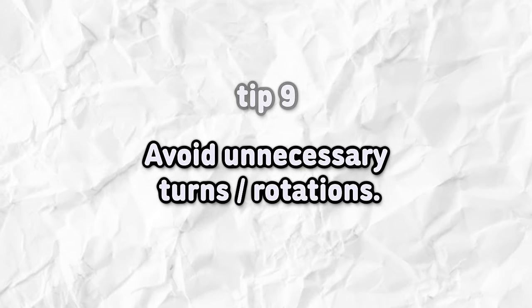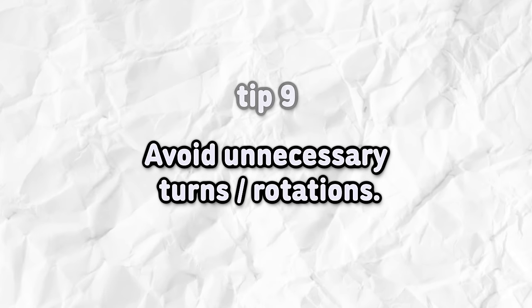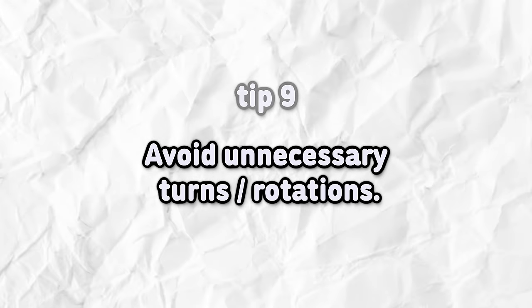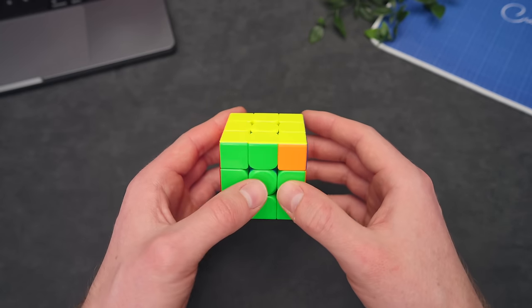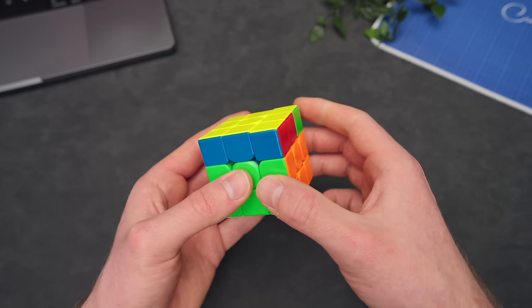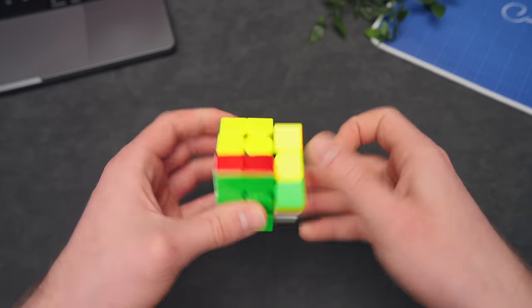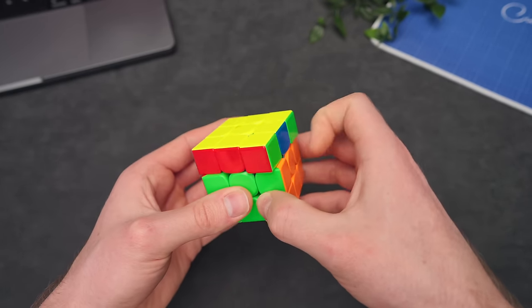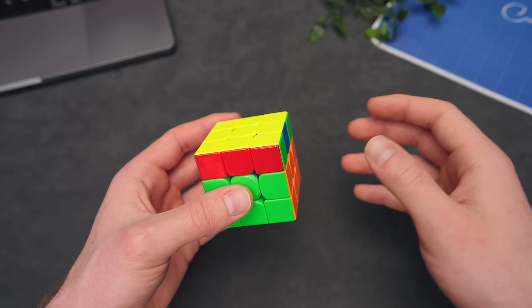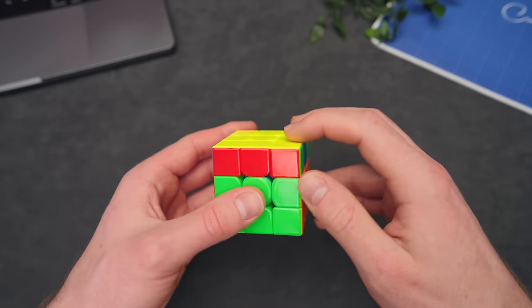And then the last tip for the last layer is to also avoid doing filler moves right here. For example, if we get to PLL right now and I want to look for headlights, don't start doing stuff like this and then, oh, here they are. And then put them to the left like that and then do the algorithm, then start doing this. By doing this, you'll just waste a lot of moves and also you'll create really bad habits.